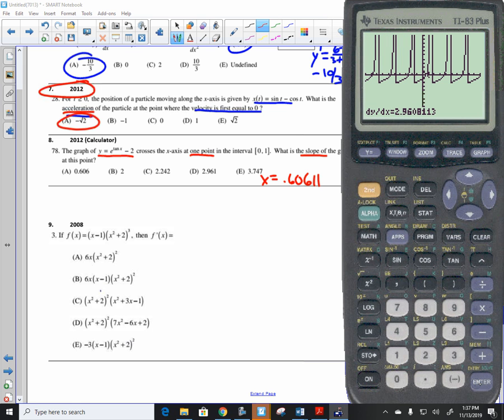Well, I can use my calculator. It's easy to find slope as my calculator. Second calculate, number 6, dy over dx. You just type in .6061, and you get 2.96. So, again, that's, I know it looks challenging. It's really quite an easy problem.